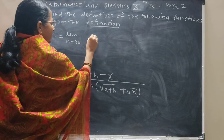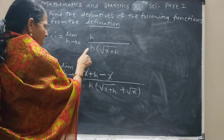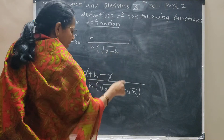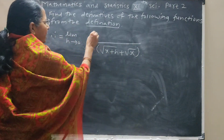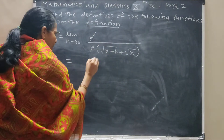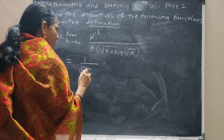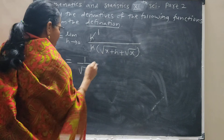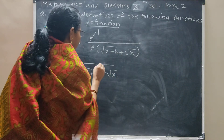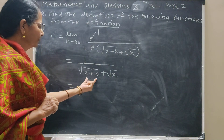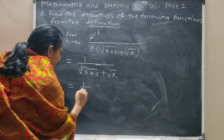This gives: limit as h tends to 0 of h divided by [h times (√(x+h) + √x)]. The h from numerator and denominator get cancelled. Now put the value of h = 0: this gives 1 upon [√(x+0) + √x], which equals 1 upon [√x + √x].